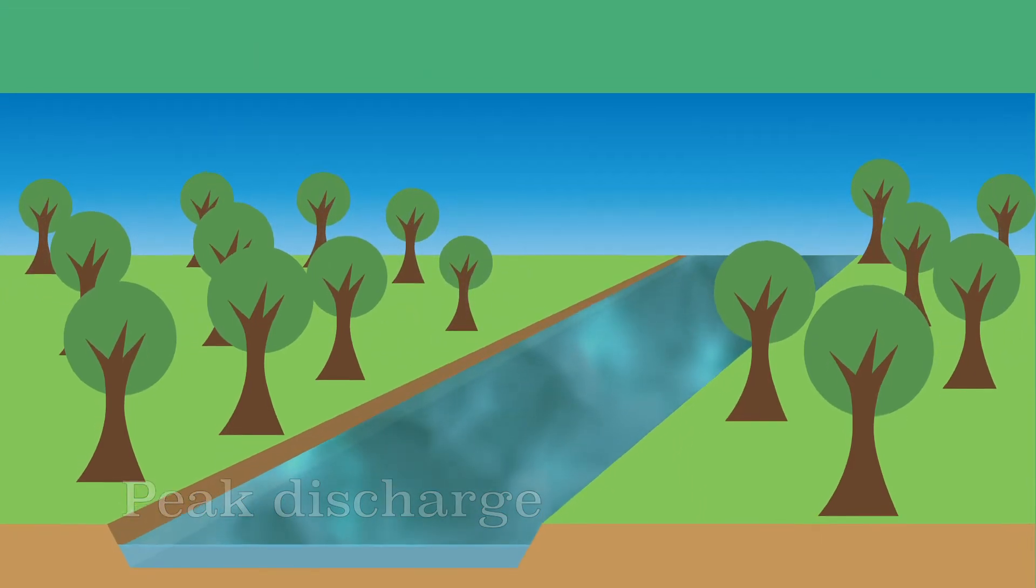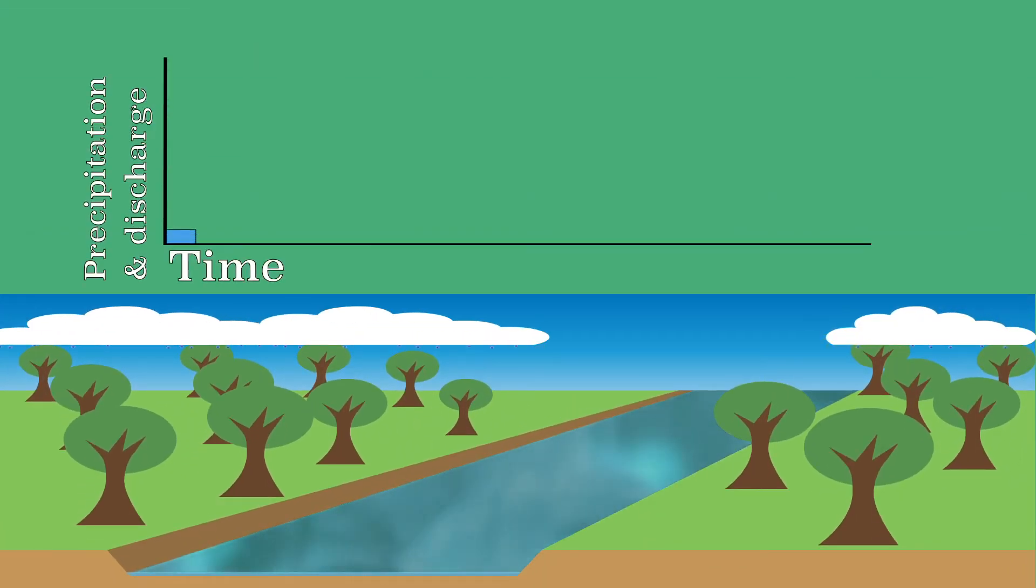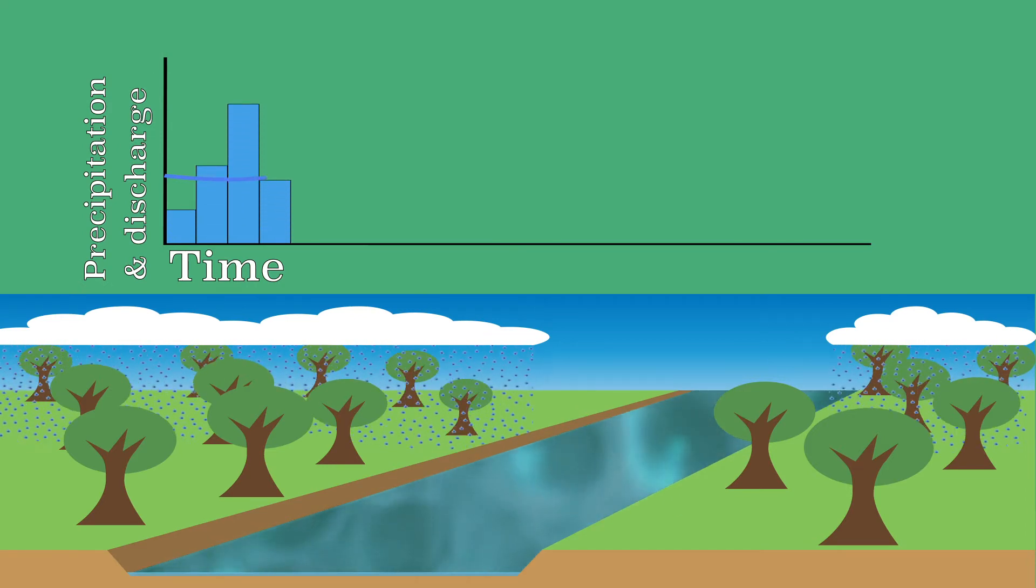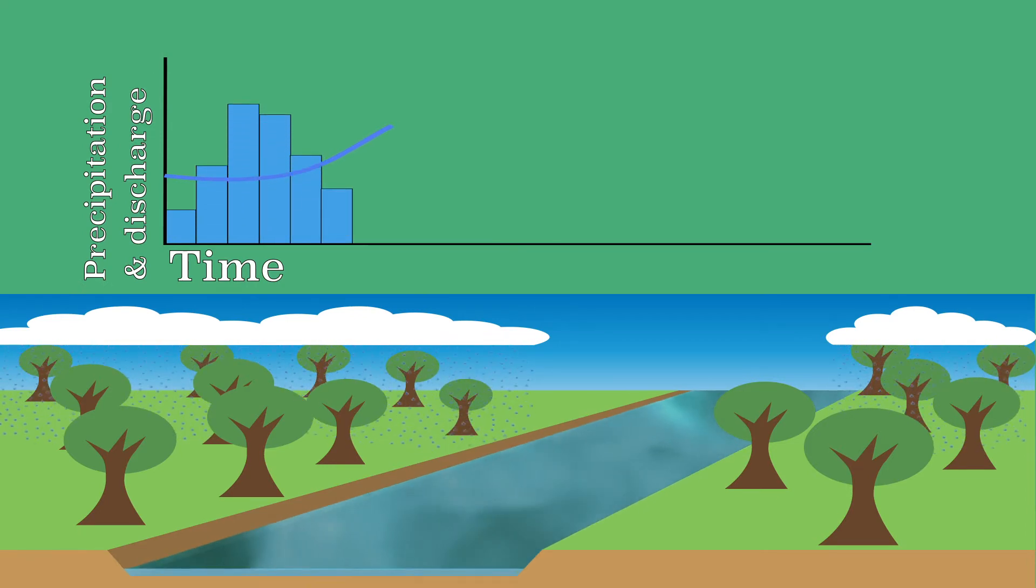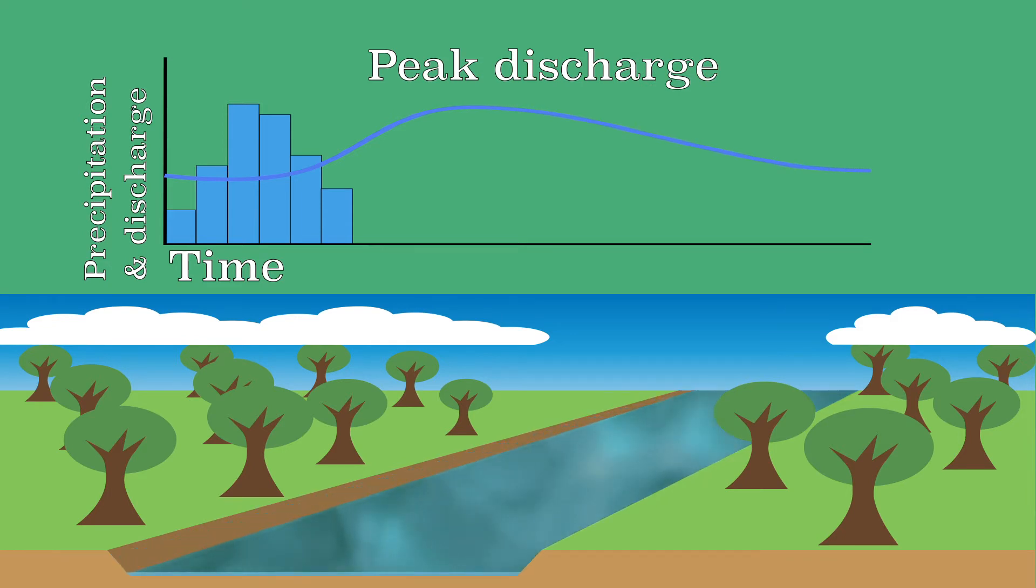We can also display this in a graph where the precipitation falls at the beginning. After a while, the water level in the river rises. Then the peak discharge is reached and then the water level drops again. The time between precipitation and peak discharge is called the lag time.